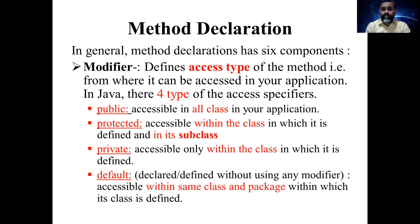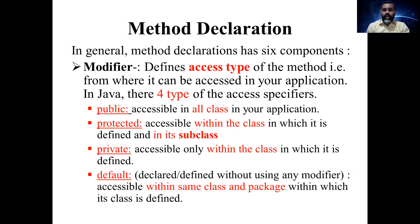There are four types of access specifiers: public, protected, private, and default. Public means the method can be accessed in all classes of the application. Protected allows accessibility within the class in which it is defined and in its subclasses — so subclasses inheriting your class can also access protected members. Private means accessibility only within the class in which it is defined; outside the class you cannot access private members.